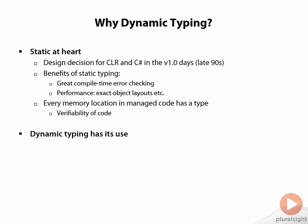However, dynamic typing has its use as well. For example, there's lots of data in the world, especially in cloud-connected applications, that are weakly typed in nature — XML files without a schema, JSON (JavaScript Object Notation) that doesn't have any type information associated with it — and still we may want to have easy-to-use patterns to access properties, attributes, and child elements in those kinds of technologies.